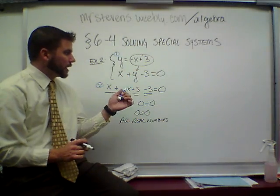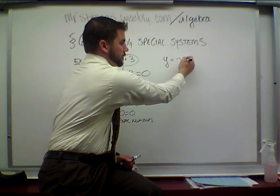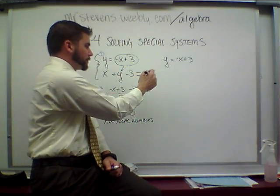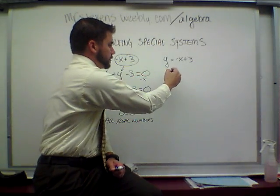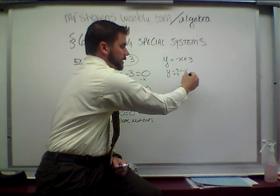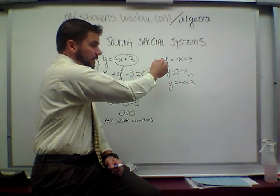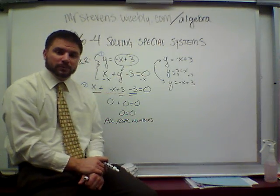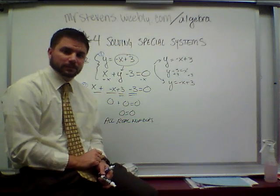So what this means is that these two lines are actually the same exact line. If I look at this a little bit further, my first equation is y equals negative x plus 3. My second equation — if I were to get y by itself, subtract the x, giving y minus 3 equals negative x, then add the 3 — with a little bit of work, I see that both of these equations are the same exact line, which ends up being all real numbers because they're laying right on top of each other. This is the second different type of a special system.